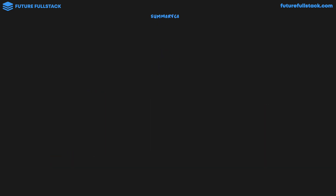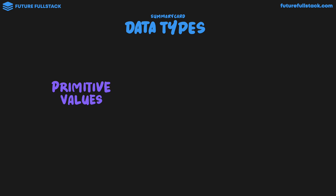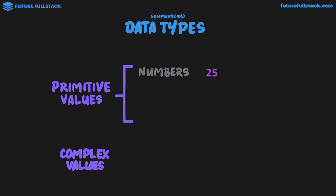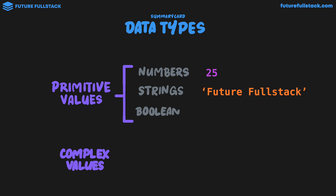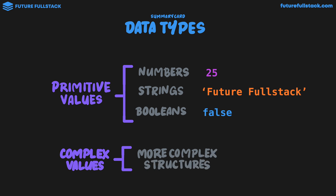Let's wrap up by building a summary card for data types. We saw there were two kinds of data types in JavaScript: primitive values and complex values. There are seven primitive values, and the three most common are: numbers like 25; strings, which are a sequence of text characters enclosed in quotation marks (single or double) like 'future full stack'; and booleans, which are a logical type that is either true or false. Complex values are more complex structures that we'll look at in much more detail later in the course.